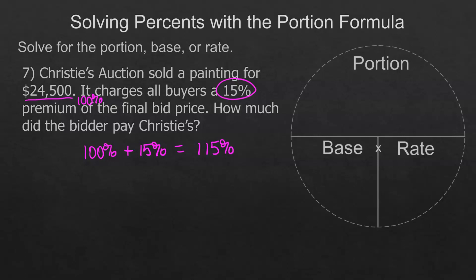Or you could use the 15%, find that and add them. It's going to work out either way and you can always check that. We are looking for the portion. Our base is straightforward on this. It's 115% and then we'll change it to 1.15 when we multiply.